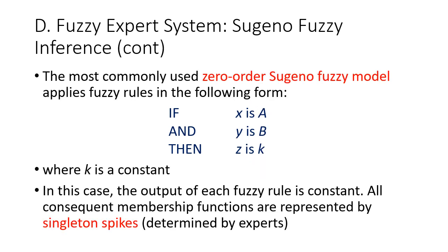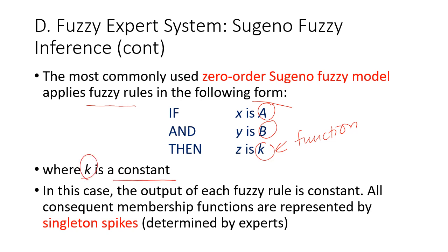The most commonly used zero-order Sugeno model applies fuzzy rules in the form: if x is A and y is B, then z is k. This k is a single constant value — this is the singleton — and the singleton spikes are determined by experts.